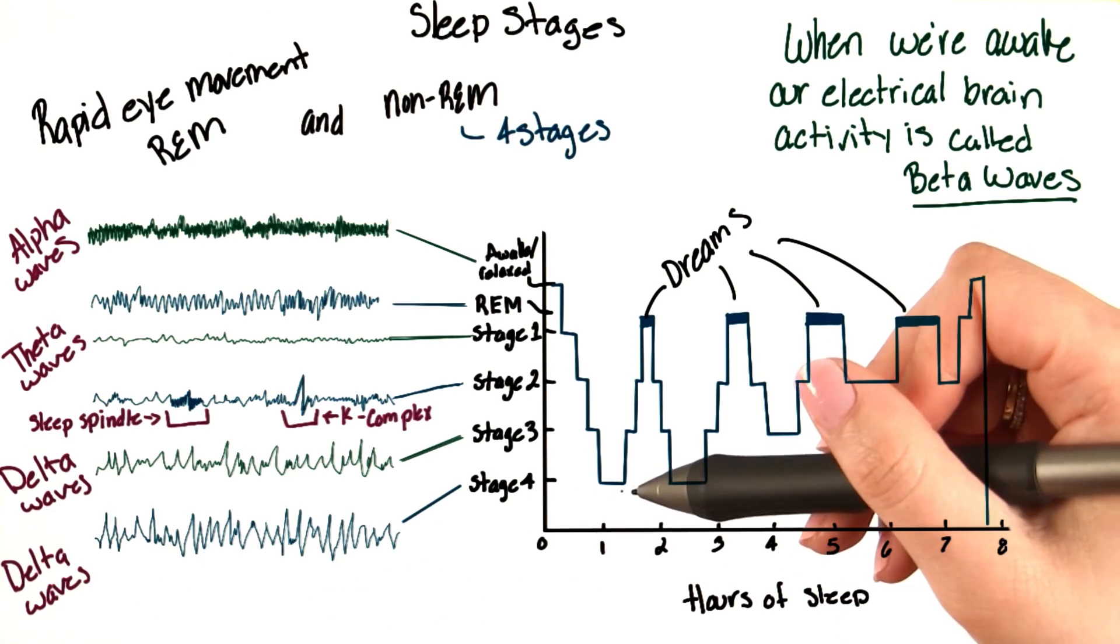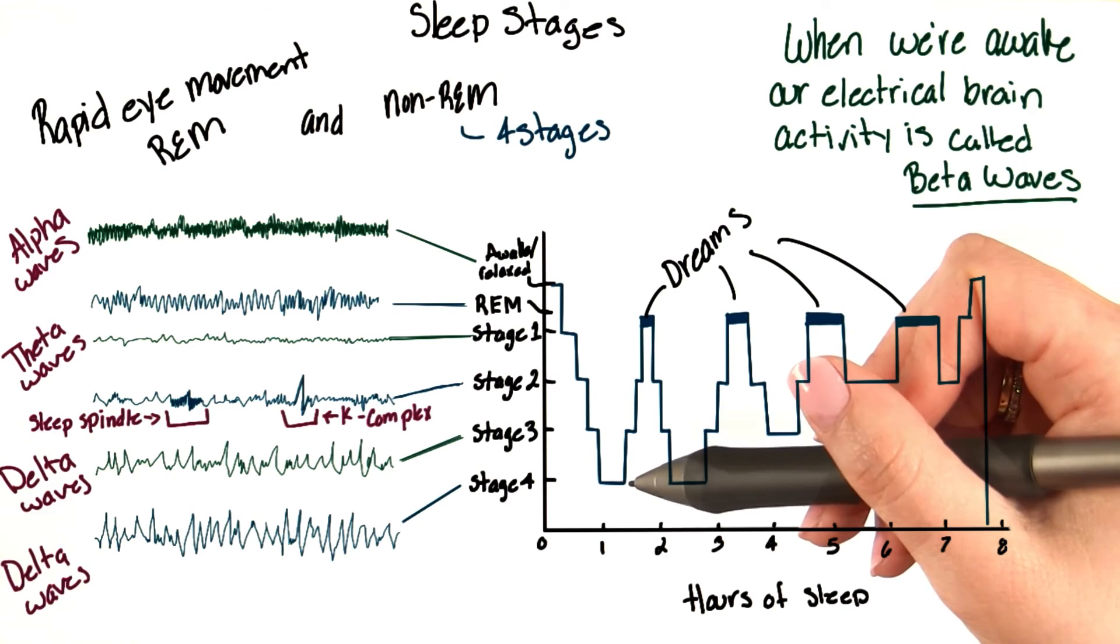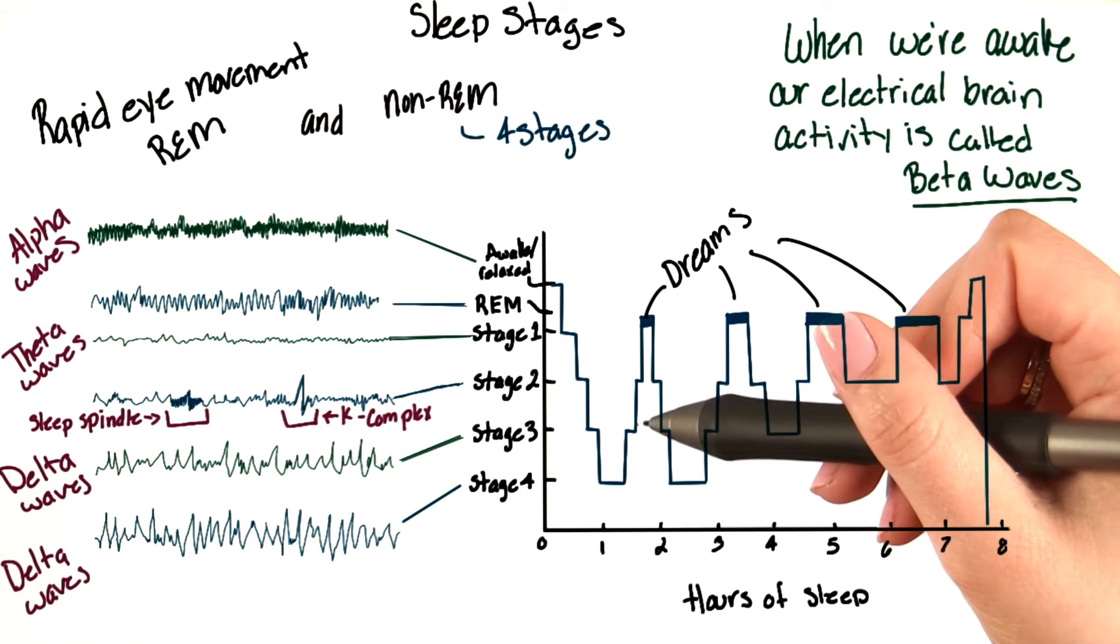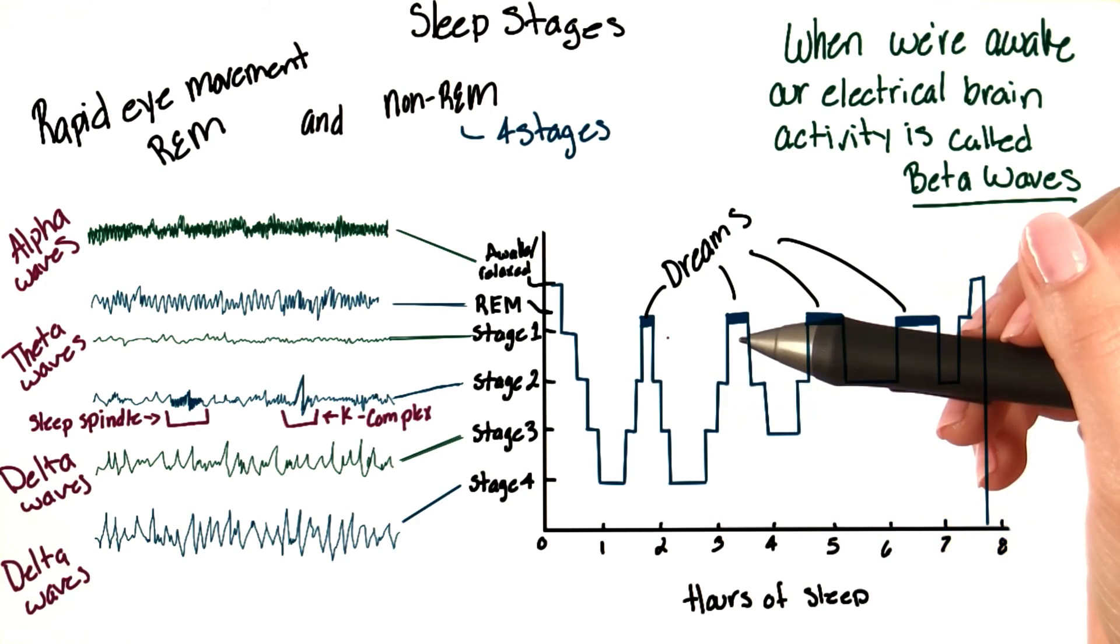Now, remember, once we hit stage four, we go back up in reverse order. So, we go from stage four to three to two to one, and then REM sleep.